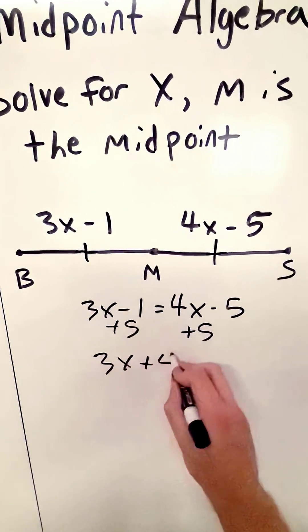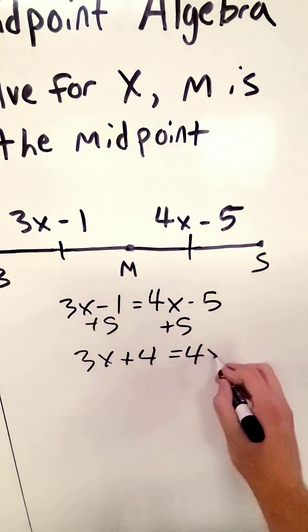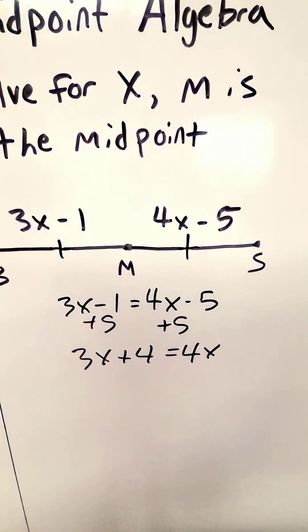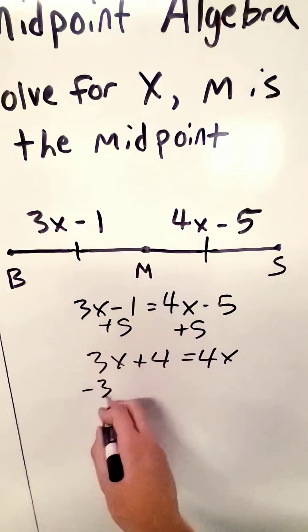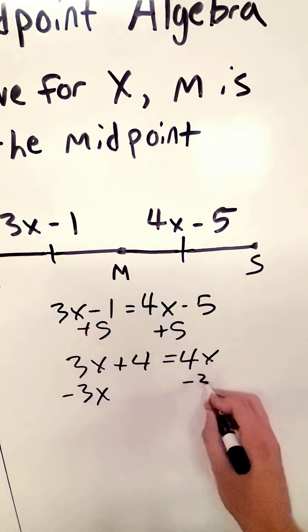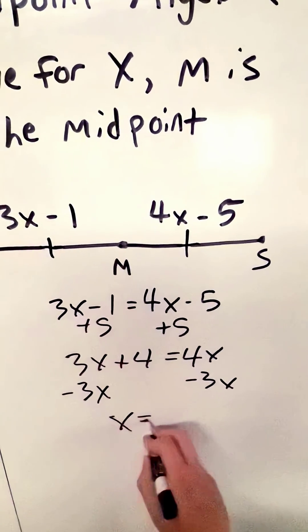We have 3x plus 4 equals 4x, and then we need to subtract 3x from both sides, and we would get that x is equal to 4.